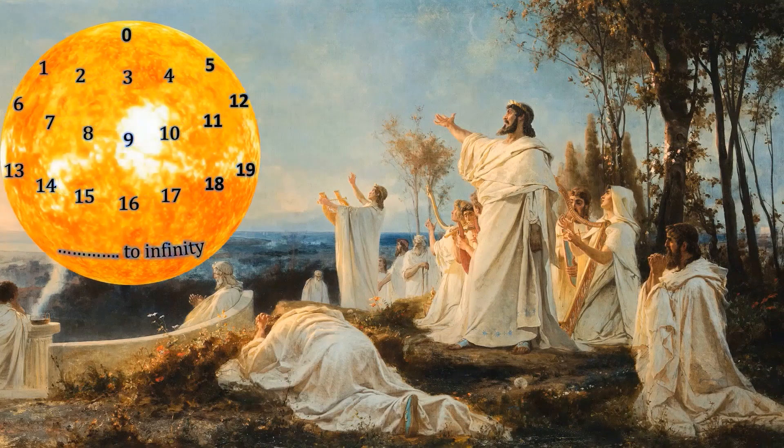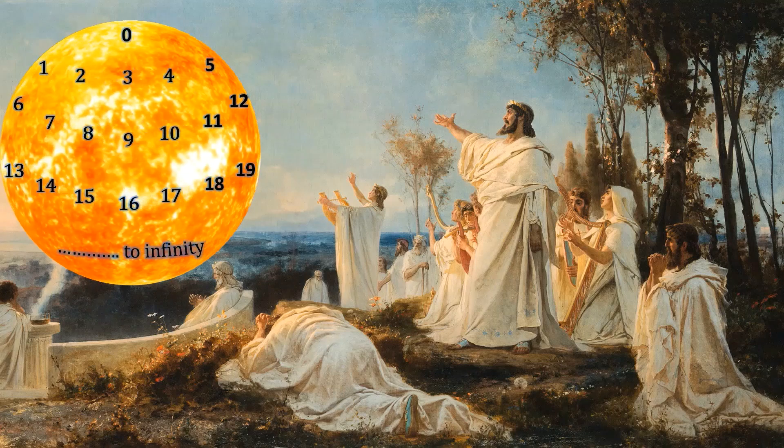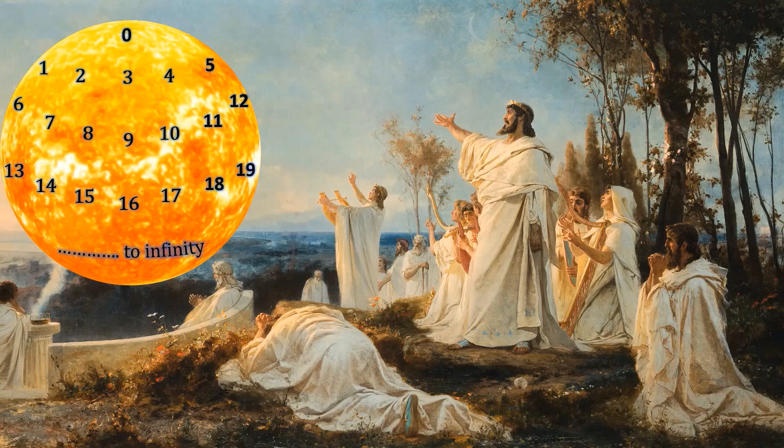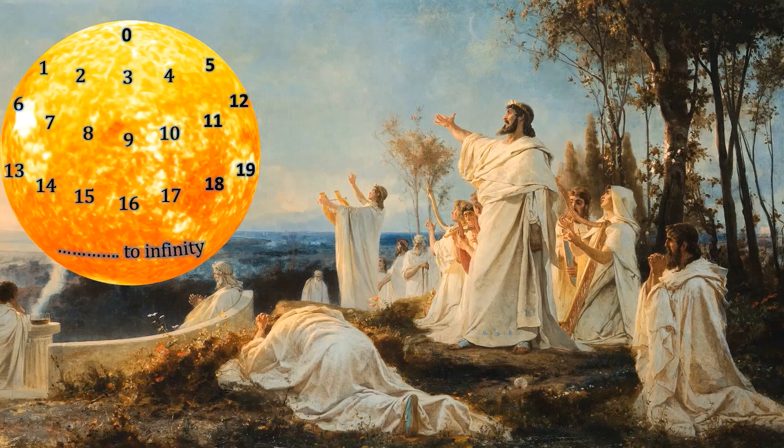The backstory here is that the Pythagoreans had strongly advocated that everything in this world could be expressed as whole numbers or ratios of whole numbers. So, can a square not be described by whole numbers? Let us see.